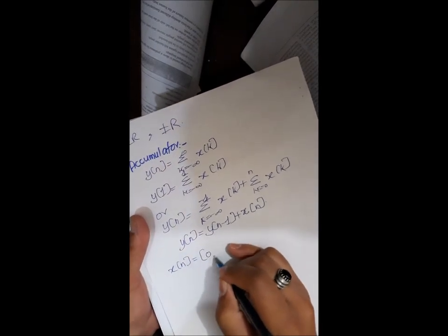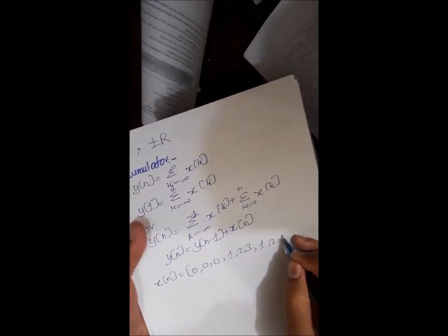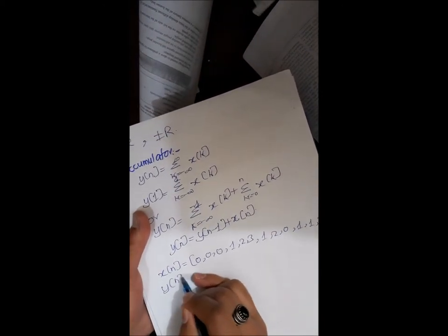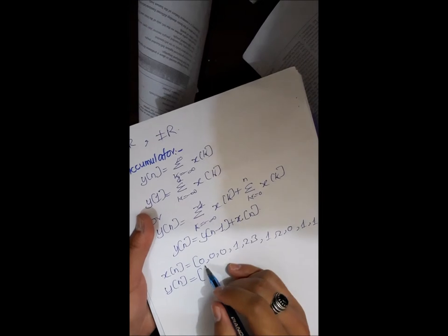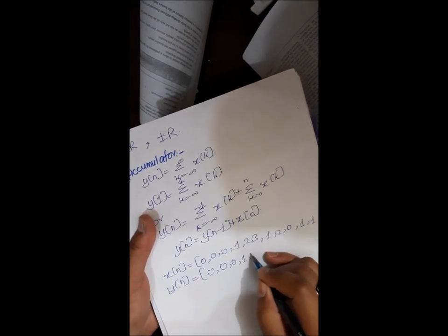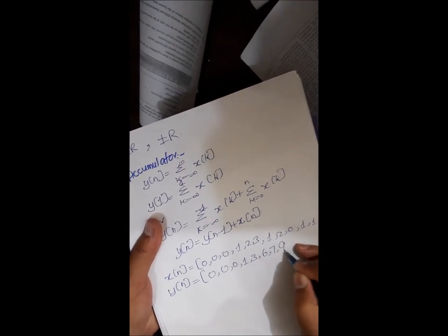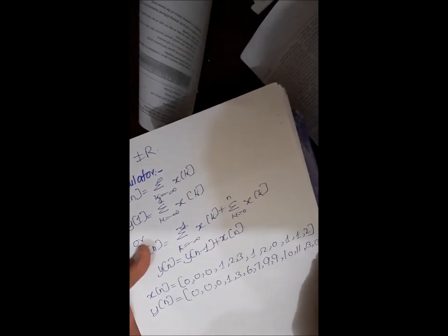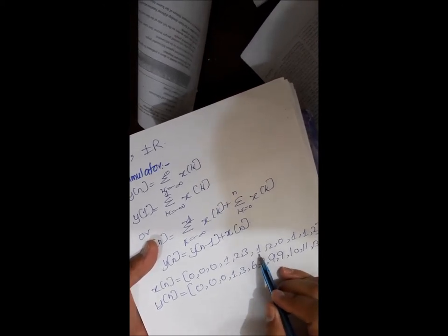If we apply it on a signal, so x of n here will be written like this: 1, 2, 0, 1, 1, 2. Here y of n is given by simply adding the numbers: 0 plus 0 is 0, 0 plus 0 is 0, 1 plus 2 is 3, 3 plus 3 is 6, and similarly after adding.